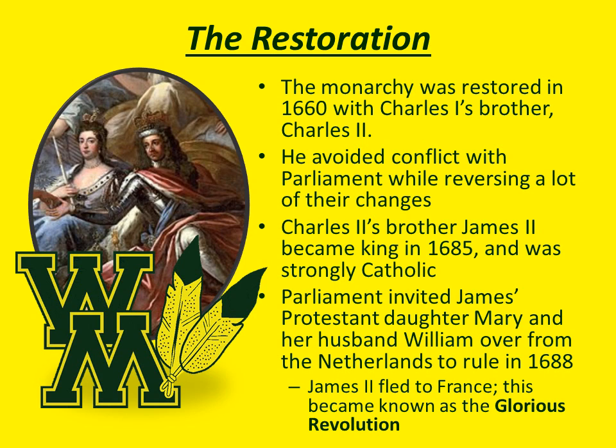Parliament decided they had enough of James II, and they invited James' daughter to rule as the leader of England with her husband, William of Orange, who was the King of the Netherlands.